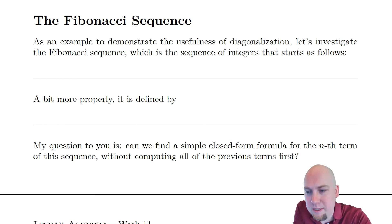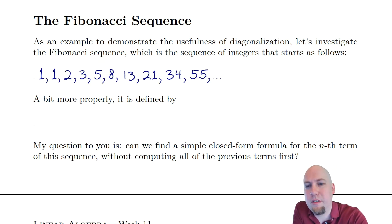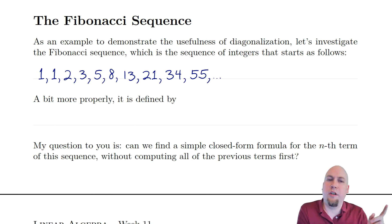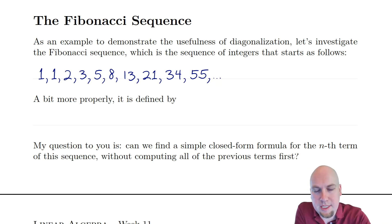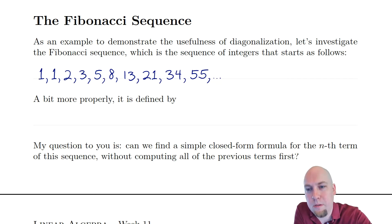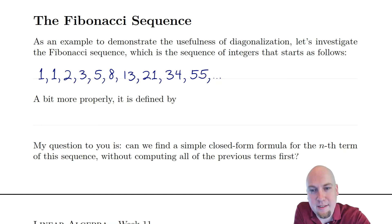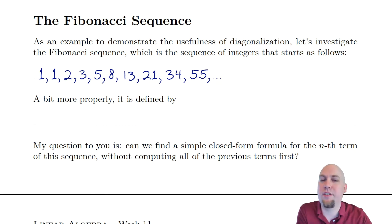What is the Fibonacci Sequence? Well, it's a sequence of integers, and you might have heard of it before. It's the sequence where it starts off 1, 1, and then every term is the sum of the previous two terms in the sequence. So the next term is 2 because 1 plus 1 is 2. Then the next term is 3 because 1 plus 2 is 3. And then 5 because 2 plus 3 is 5. Then 3 plus 5 is 8, and 5 plus 8 is 13. You just keep on adding up two terms at a time to get the next term.